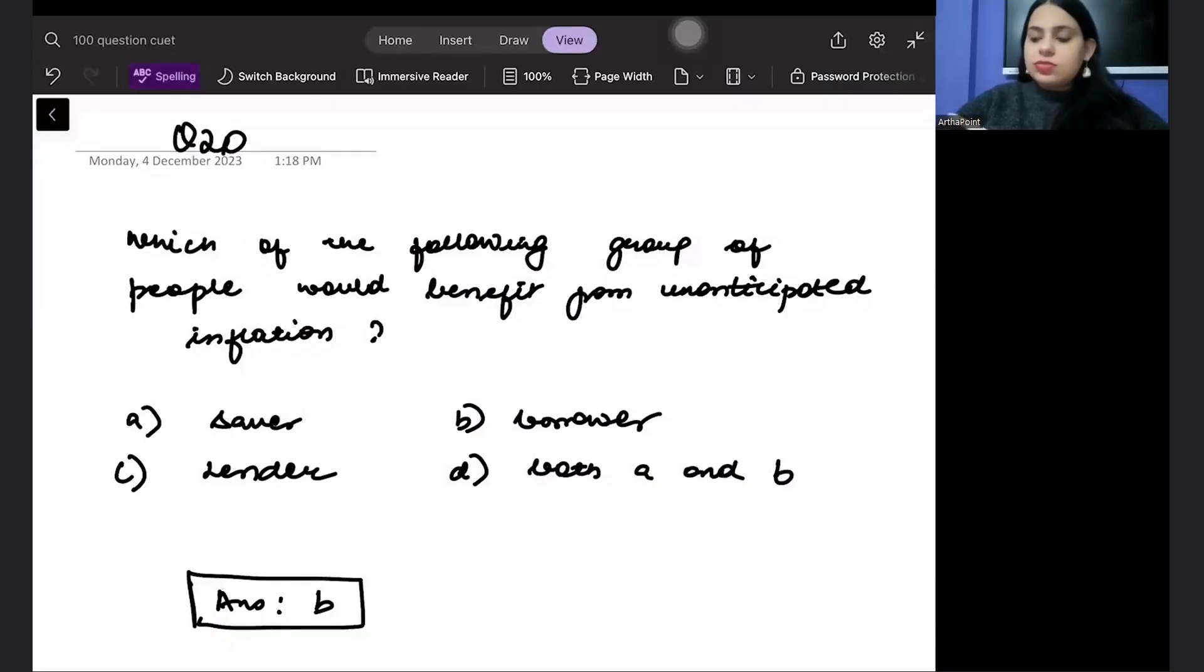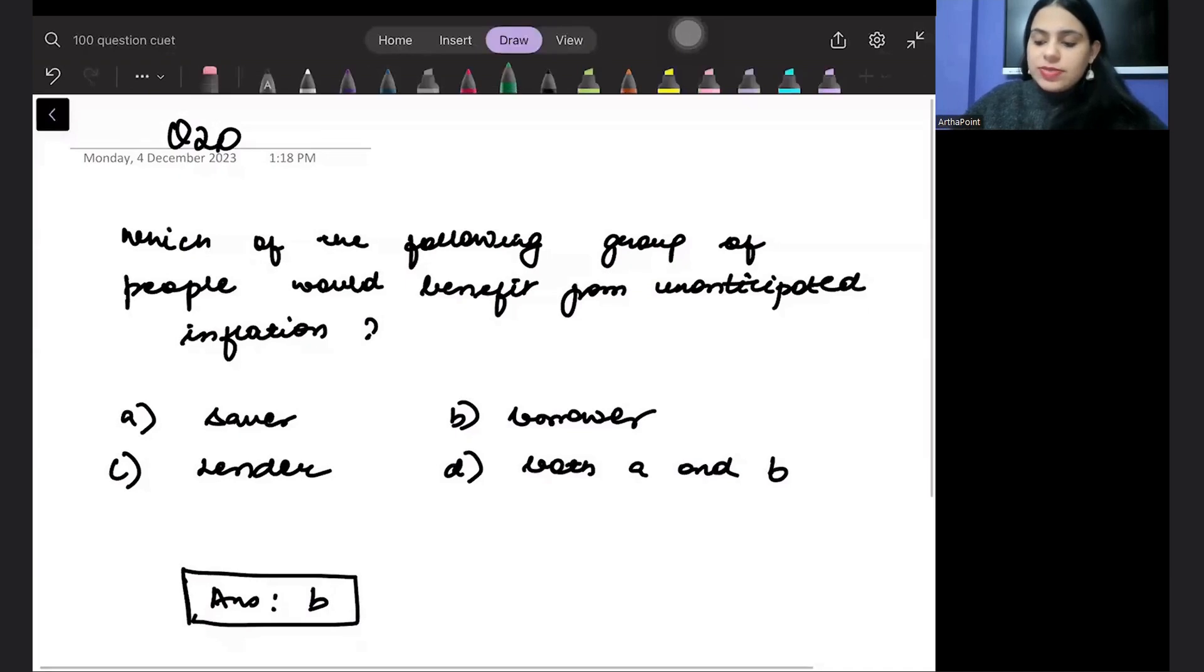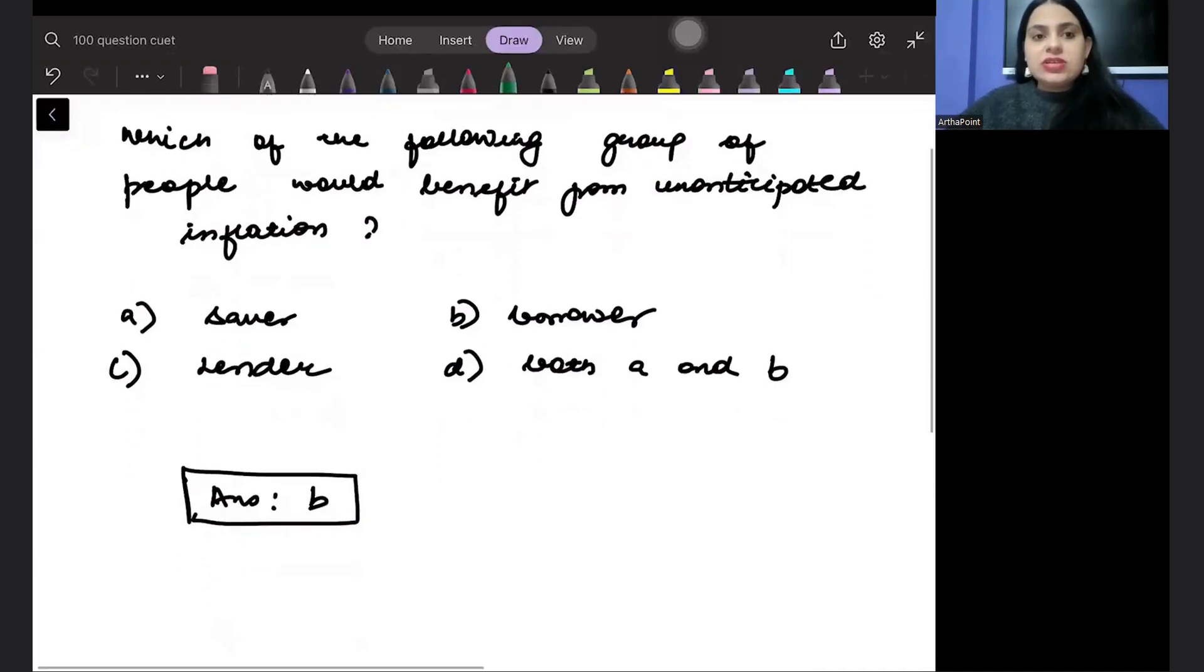Good evening, everyone. Welcome to day 20 of our CUET Quotient Bank series. The question of today is, which of the following group of people would benefit from unanticipated inflation?